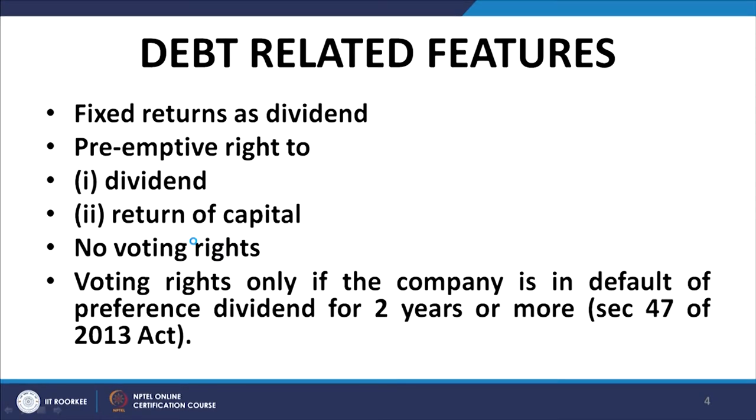However, if the preference dividend is in arrears for two years or more, then the preference shareholders get a right under Section 47 of the 2013 Companies Act to vote on resolutions on which equity shareholders are entitled to vote.